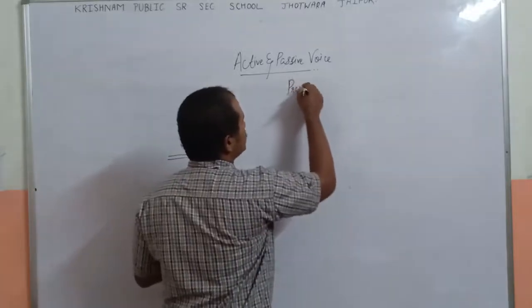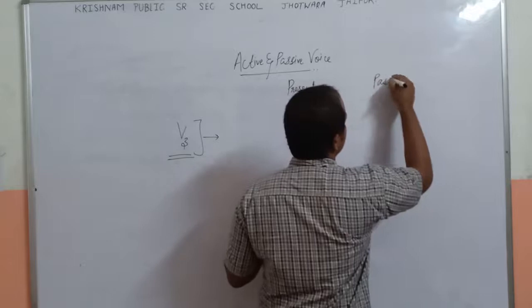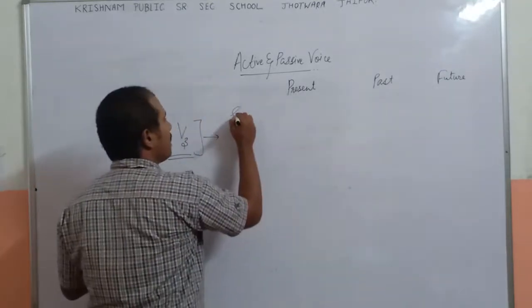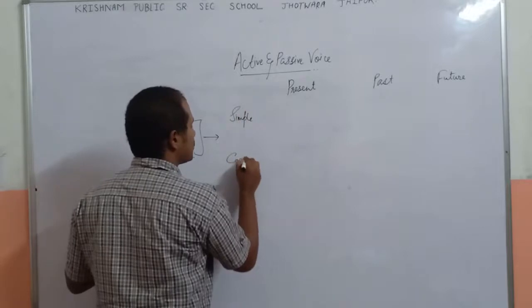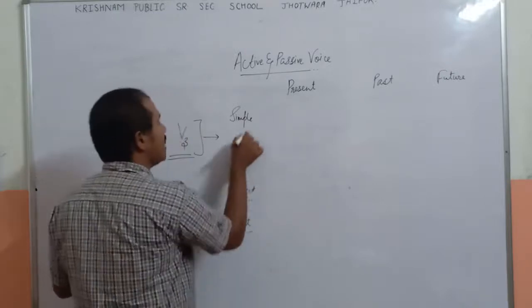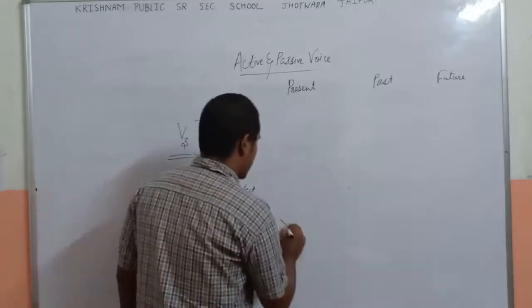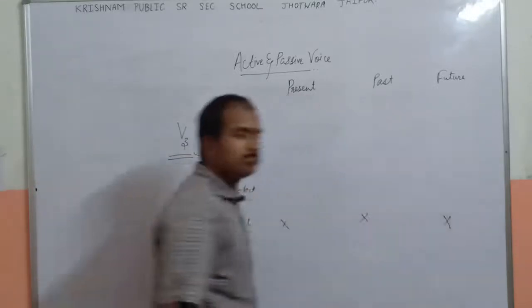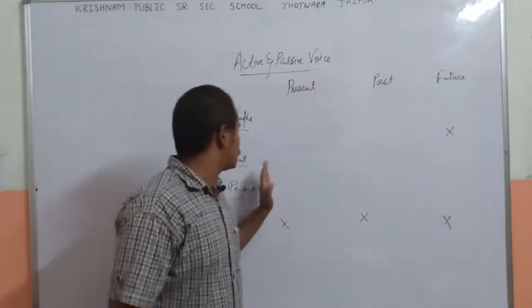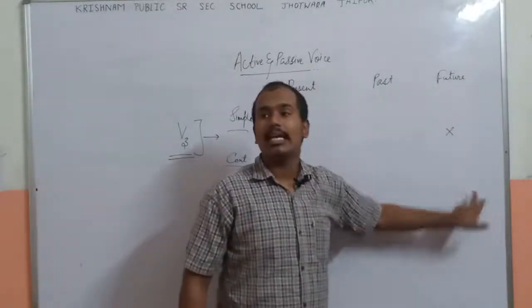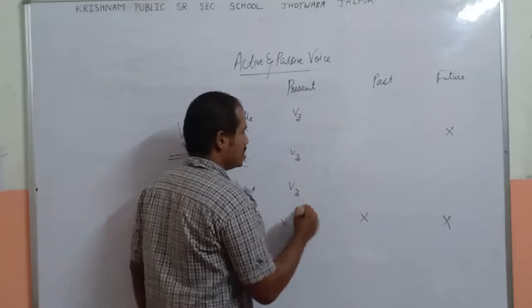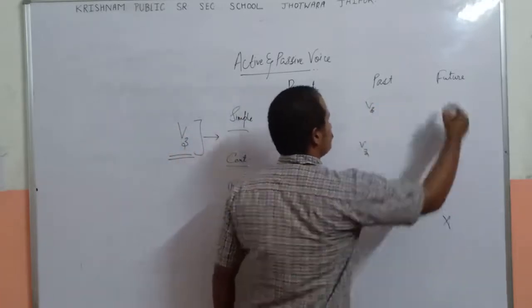As always, we will be taking 3 tenses: present, past, and future. All 3 tenses are subdivided into 4 parts: simple, continuous, perfect, and perfect continuous. Amongst these, we will not be making the perfect continuous, and we will not be making future continuous. So as I said, we will only have 8 rules, and over all these places the verb's form will remain third.